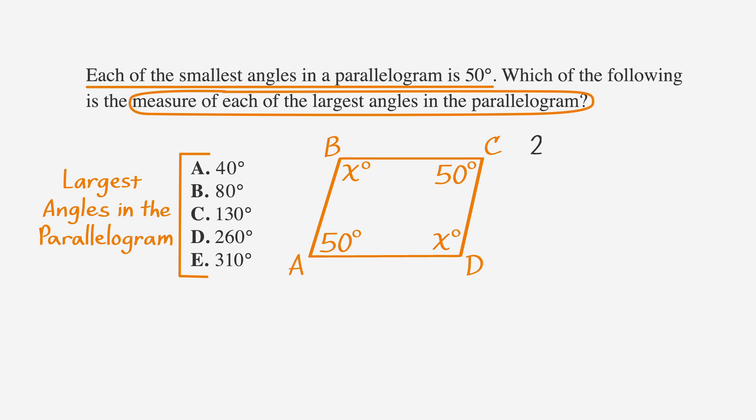Our equation is 2x plus 2 times 50 equals 360. Simplify that to 2x plus 100. Now we can subtract 100 from both sides and get 2x equals 260. Next we'll divide by 2 and we find that x equals 130 degrees, which is answer choice C.